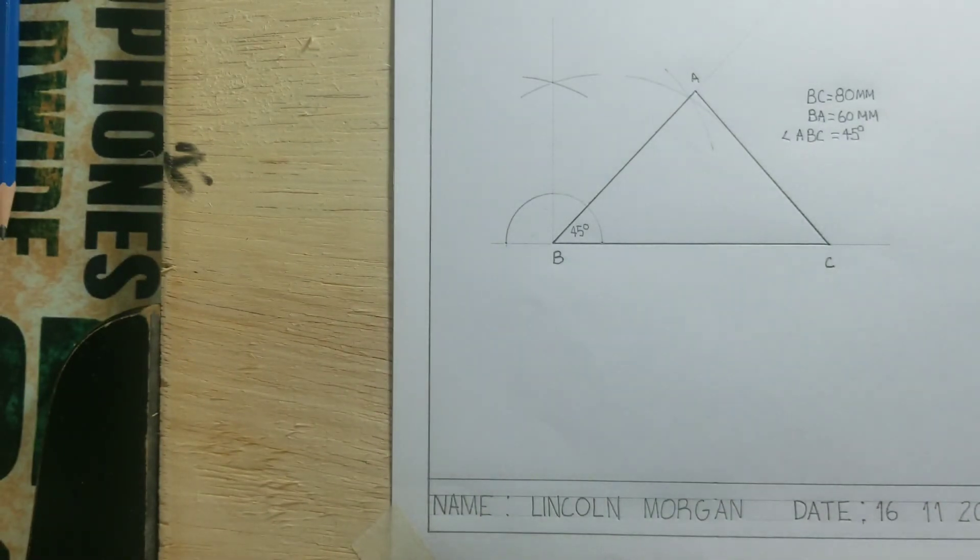Now this is how we construct a triangle when we are given the length of two sides and also the included angle.